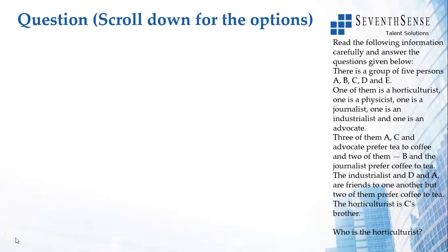In this question, we have these five occupations: Horticulturist, Physicist, and Journalist. We have Industrialist and Advocate. These five have to be allocated.